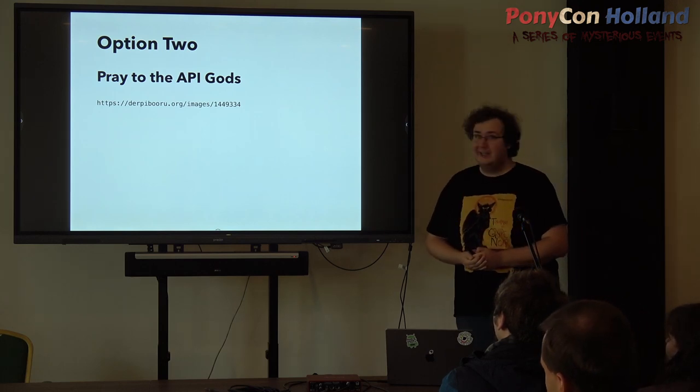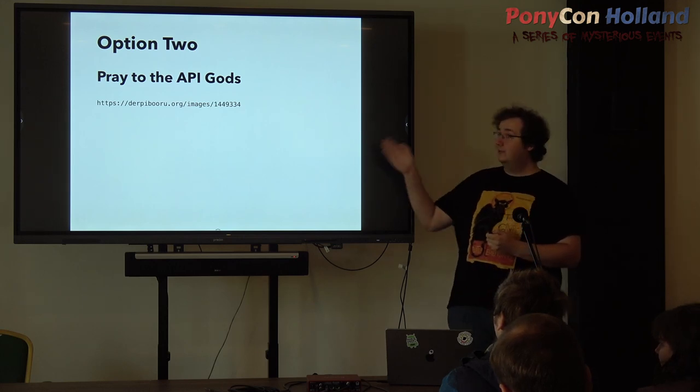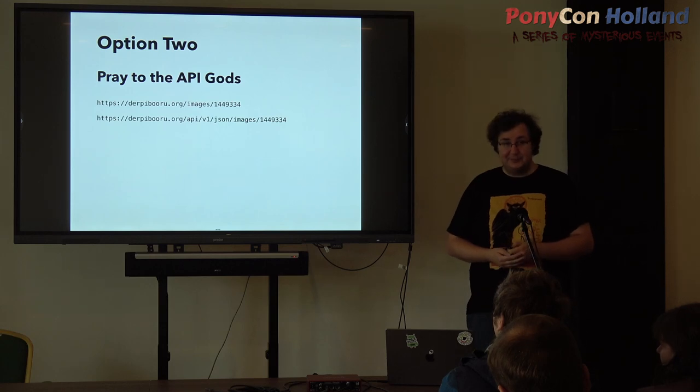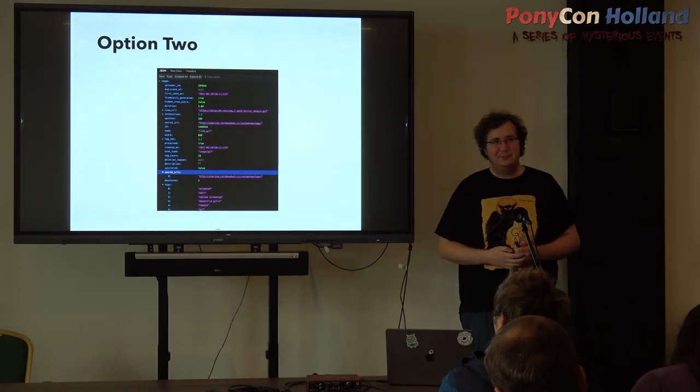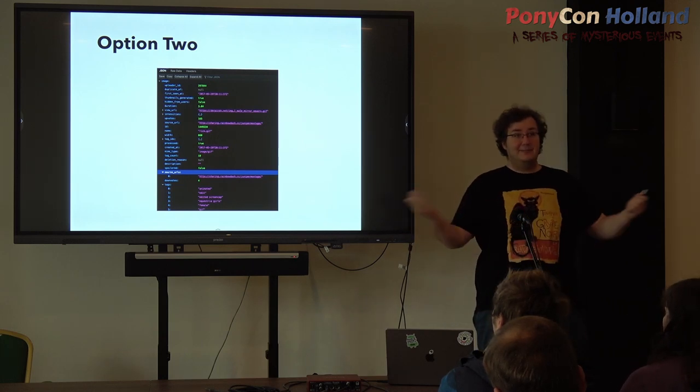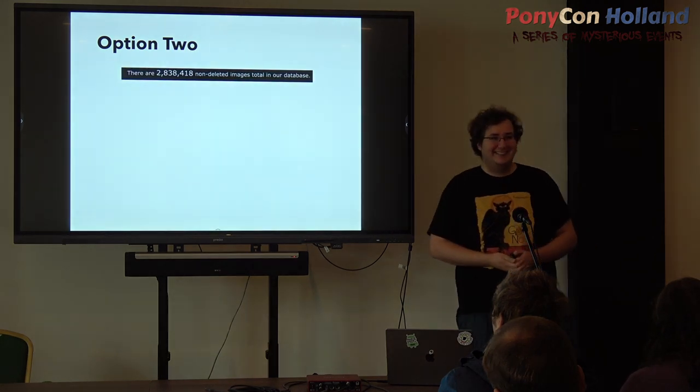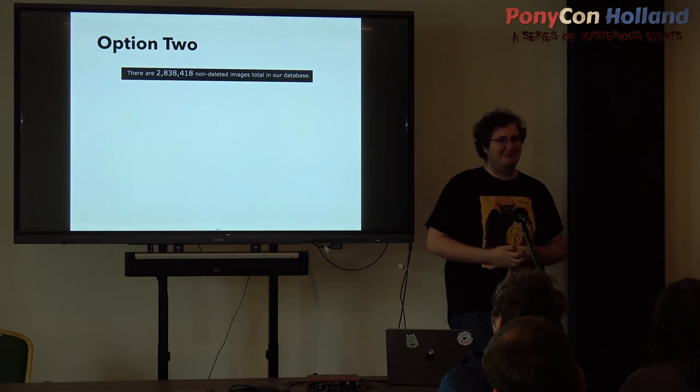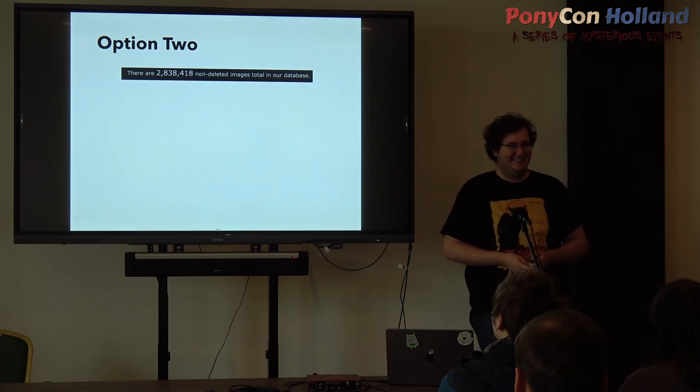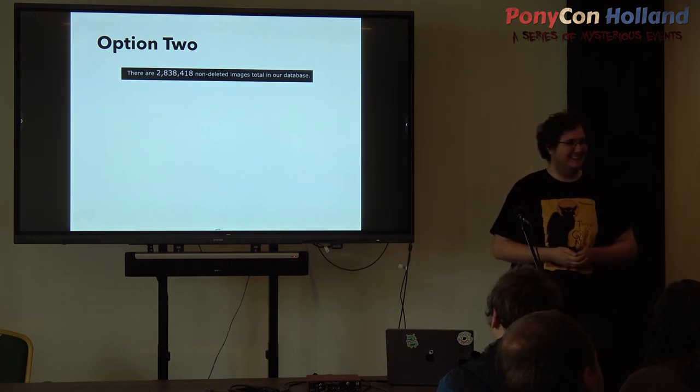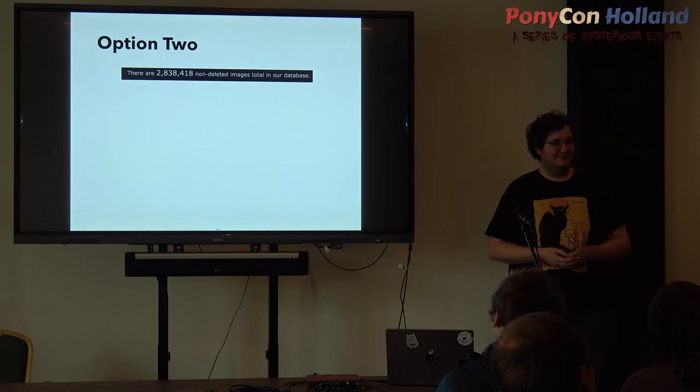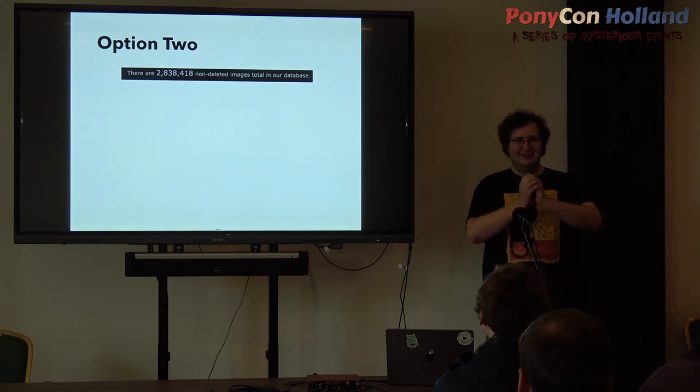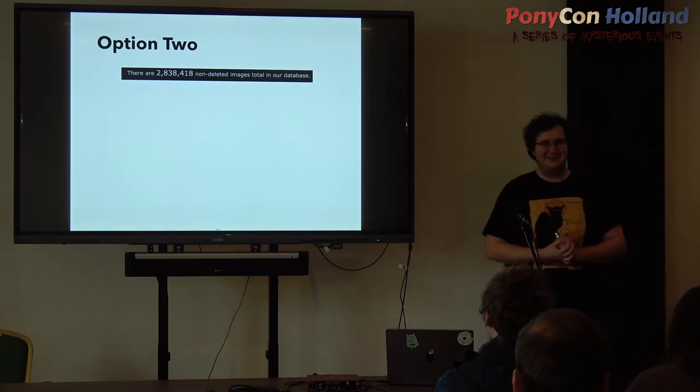Let's automate it by scraping the website. Derpibooru has a pretty standard format for the URLs. If you go to this URL, you will find a picture. And if you then slap a bit of stuff in between, you get this wonderful output, which is basically all of the information you could possibly want from an image in a machine-readable format. That's great. Small problem: 2.8 million images. I don't have the time for that, and they would probably be pretty quick to tell me, please stop flooding our servers.